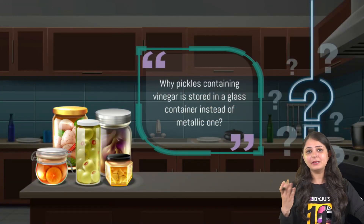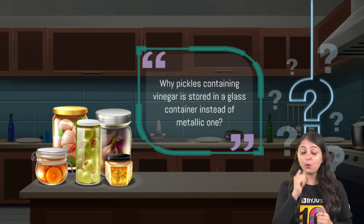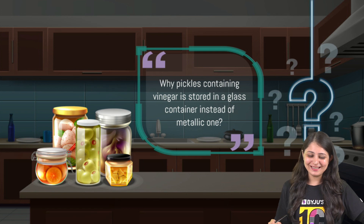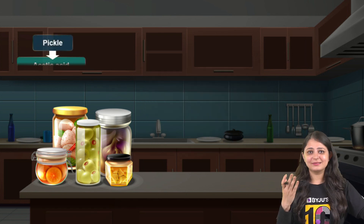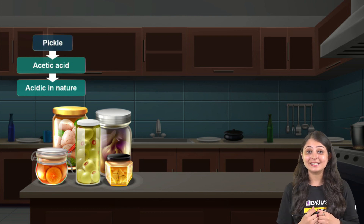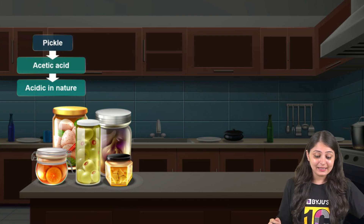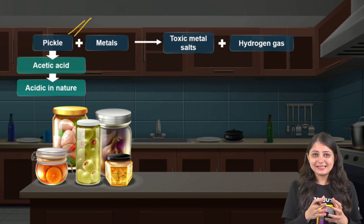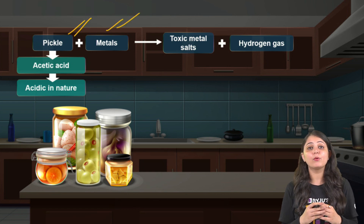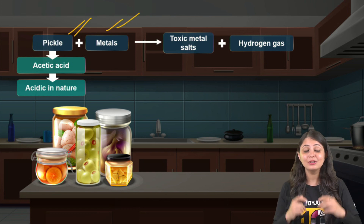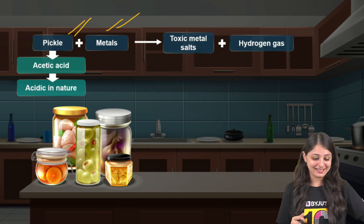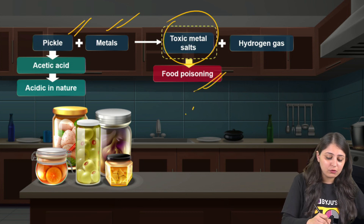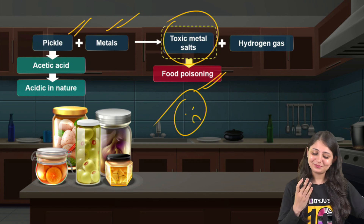Relating this to daily life — pickles are always kept in glass containers and not metal containers. This is because pickles contain vinegar, which contains acetic acid. This acid can react with metal containers to produce poisonous salts, causing food poisoning. That is why pickles are stored in glass containers.